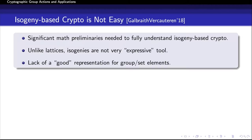Unfortunately, doing isogeny-based crypto is not easy. In a paper published in 2018 by Galbraith and Venkatesan, they pointed out some difficulties of doing isogeny-based crypto. First of all, unlike most other concrete cryptographic assumptions, significant math background is needed to fully comprehend isogeny-based assumptions. In addition, unlike lattices, isogenies are not very expressive, and for certain isogeny-based assumptions, we do not even have a good representation for set or group elements.